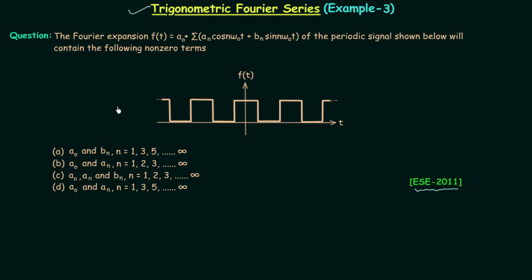So basically this question is talking about a0, an and bn. In the four options, you can see different combinations with different possibilities and we are required to comment about a0, an and bn and the only information given is the waveform. So we will analyze the given waveform and try to collect the information about a0, an and bn.